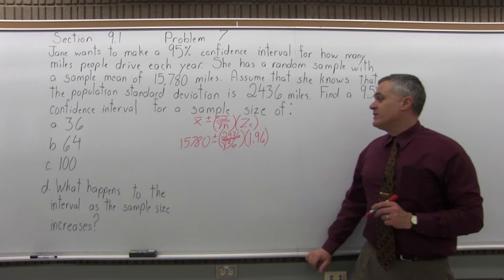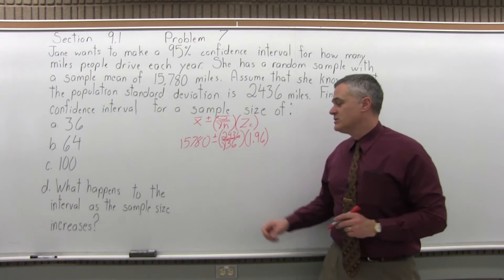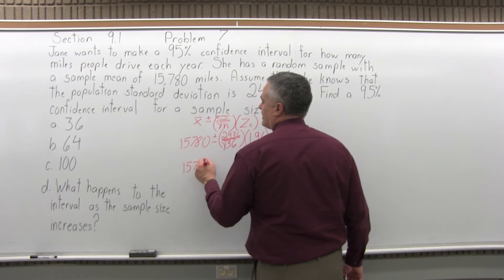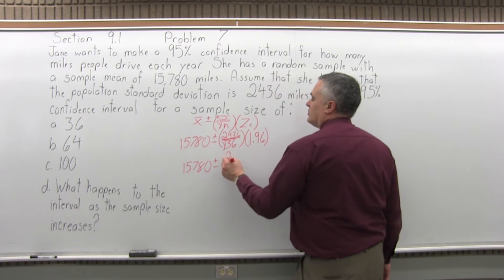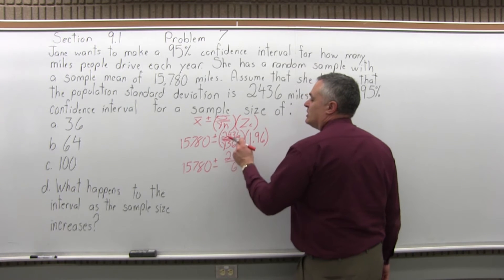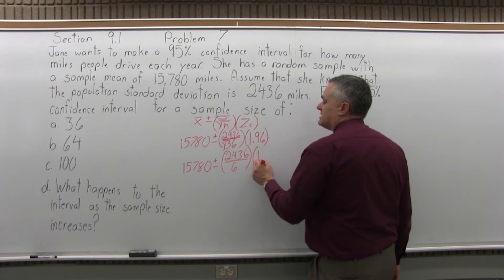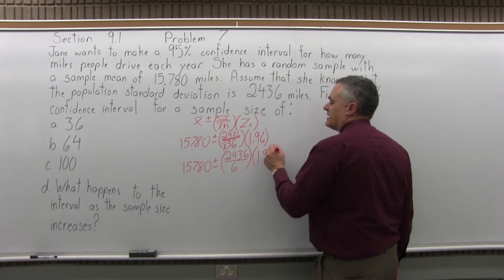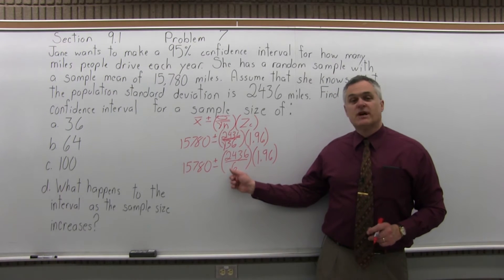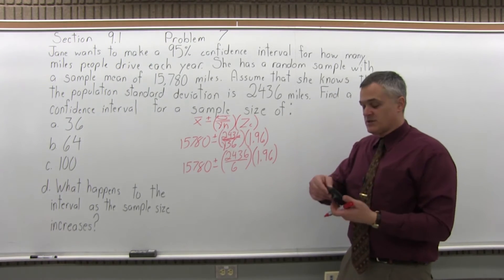Now that it's filled in, we need to deal with the square root first. So we'll have 15,780 plus or minus 2,436 divided by 6 — the square root of 36 is 6, because 6 times 6 is 36 — and z sub c stays on the end as 1.96. The next thing I can do is divide 2,436 divided by 6, and it should be 406.